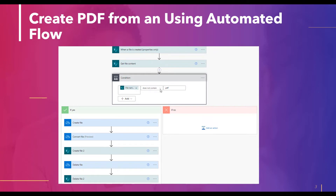When a file is created, we can create multiple types of files. Then it will get the file contents. We will put a condition whether the file is in PDF format or not. If it is not a PDF format, it will create a PDF in a secondary location — the OneDrive location — as the OneDrive connector provides an action where we can convert the file into PDF format.